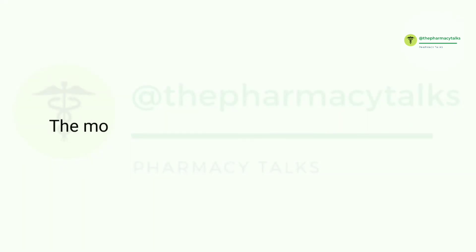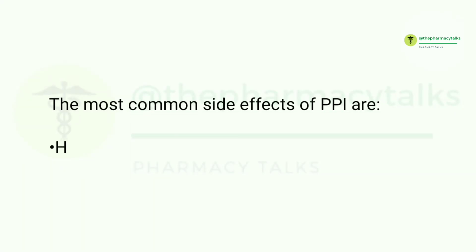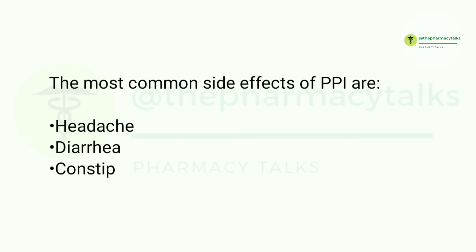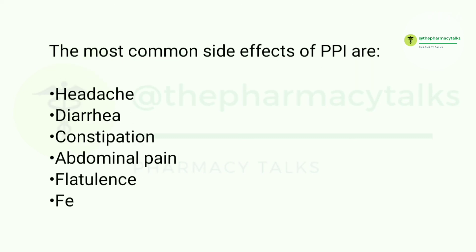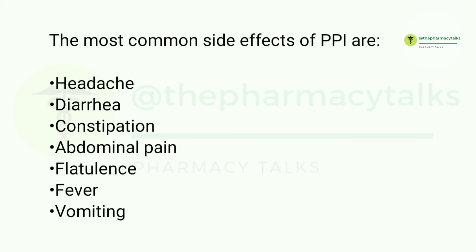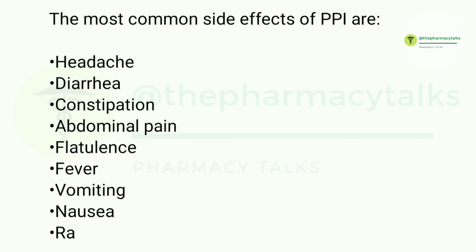The most common side effects of proton pump inhibitors are headache, diarrhea, constipation, abdominal pain, flatulence, fever, vomiting, nausea, and rashes. That's all for this lecture. Like this video if you find it valuable and subscribe to the channel.